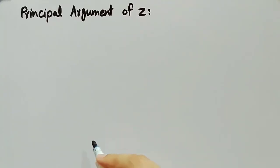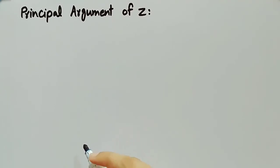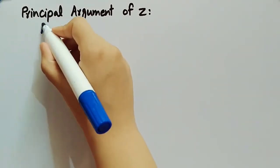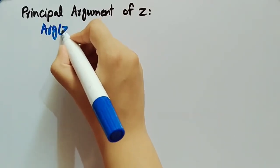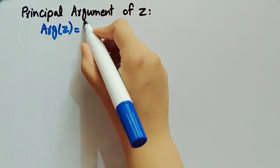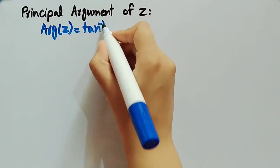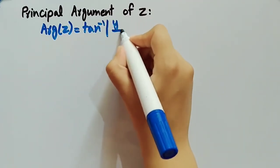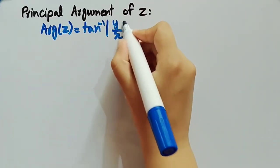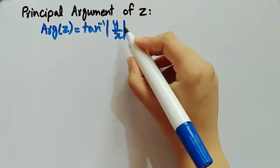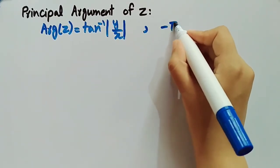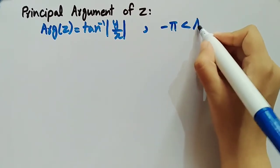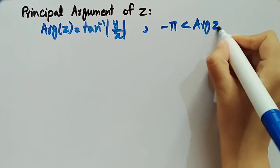Now we will discuss the principal argument of a complex number. The principal argument is represented by arg(z) and is equal to tan inverse of y by x. However, there is a restriction: the principal argument must lie between minus π and π.